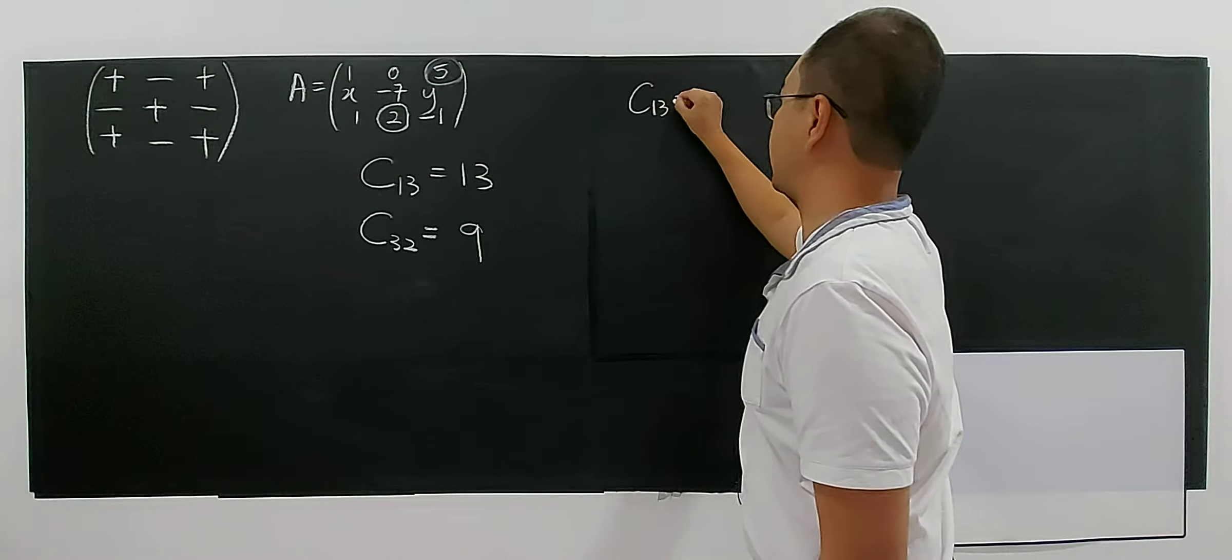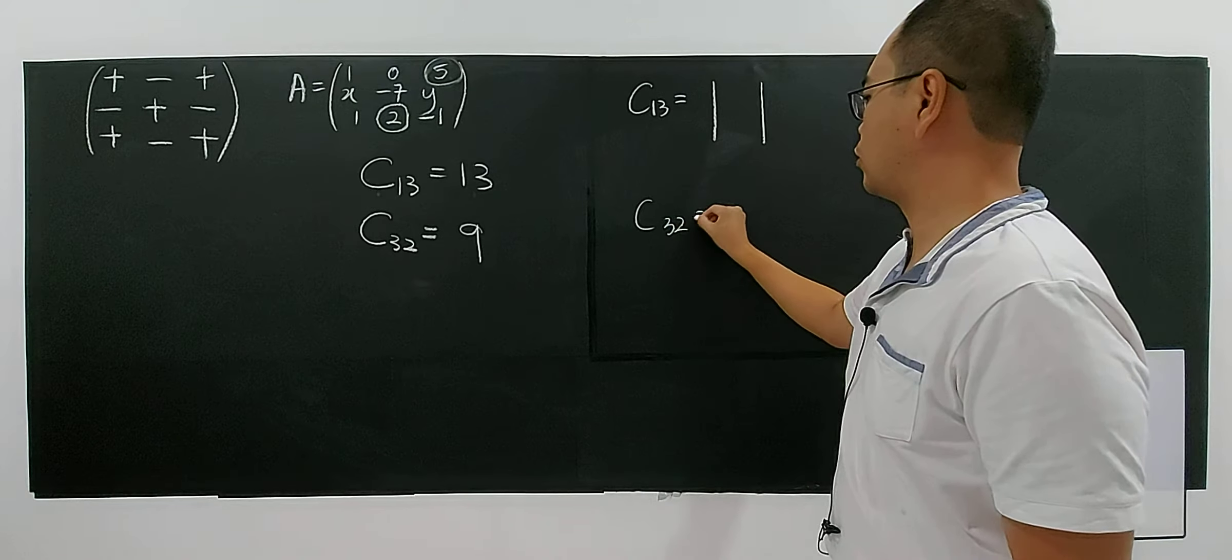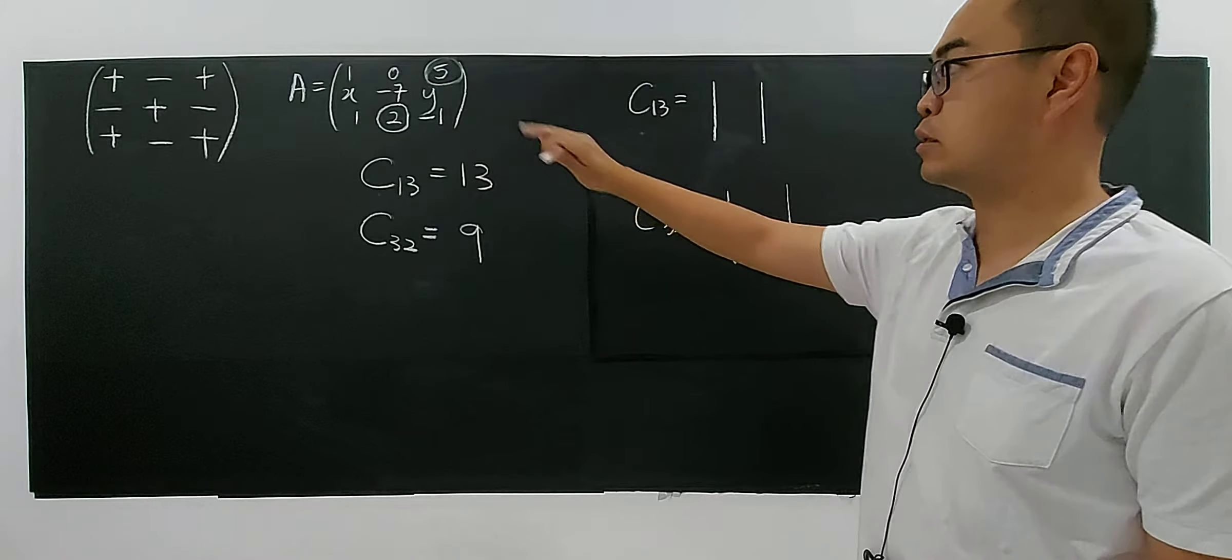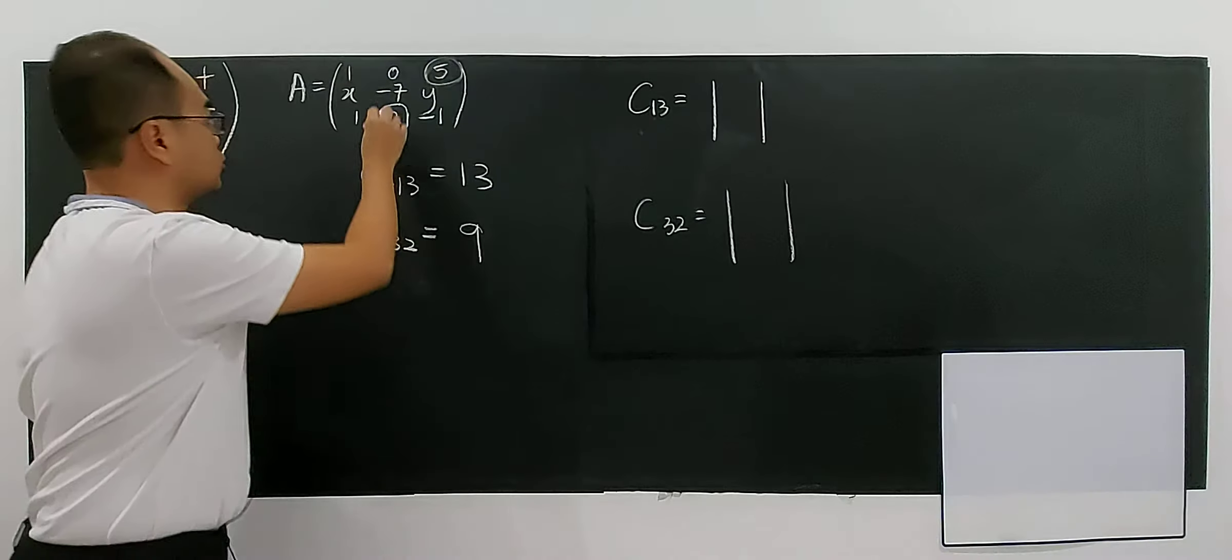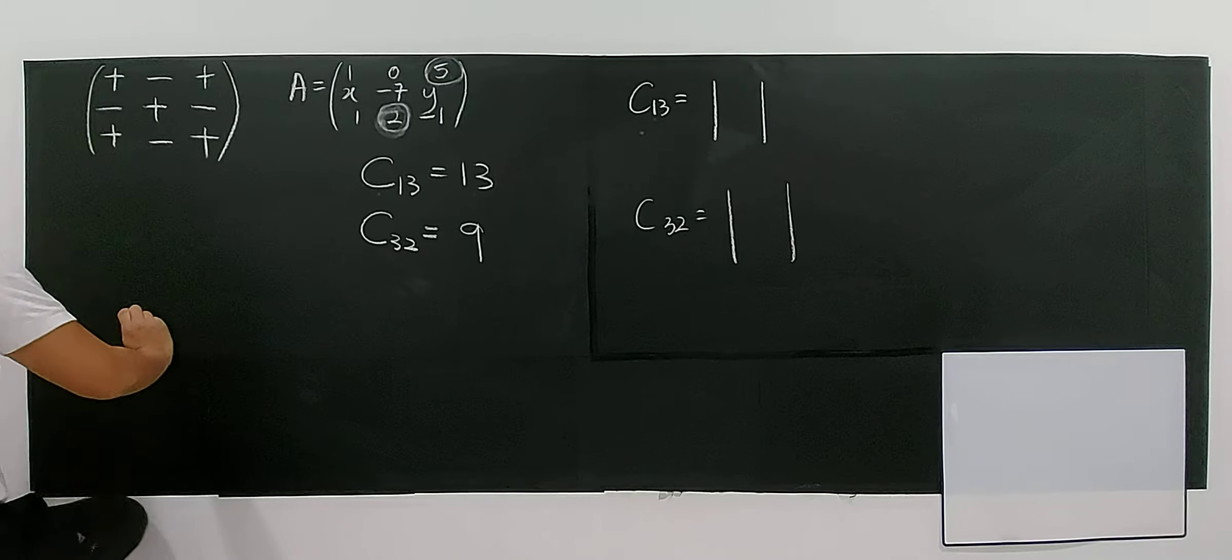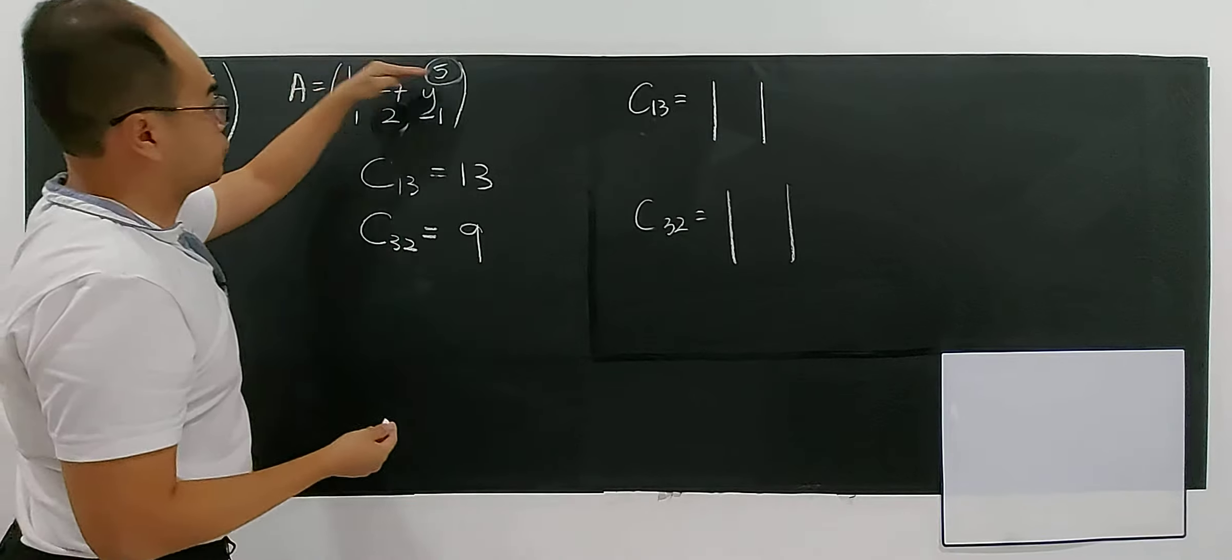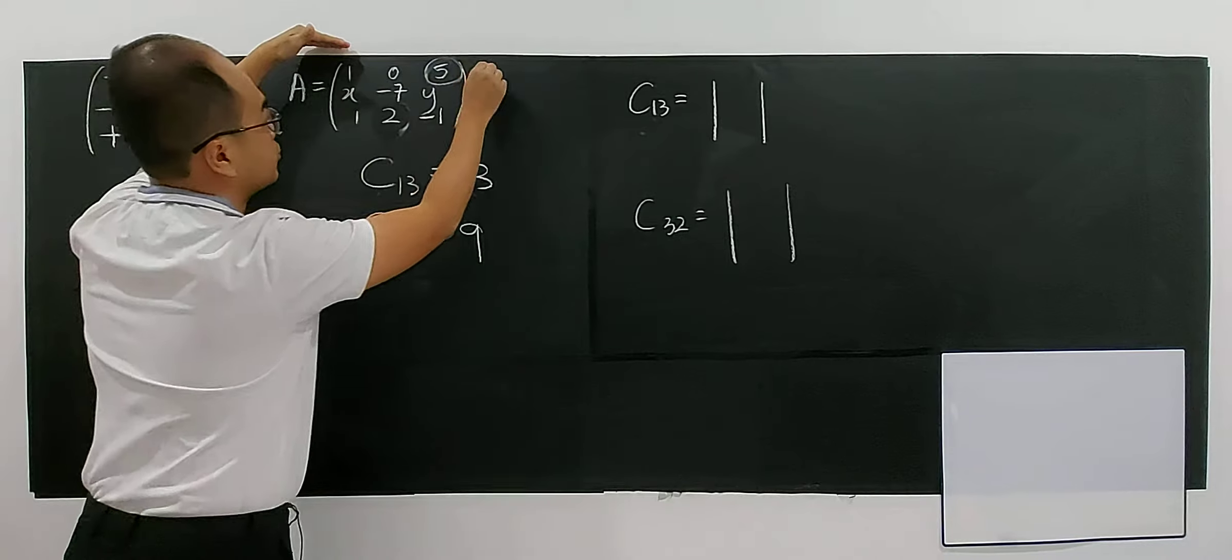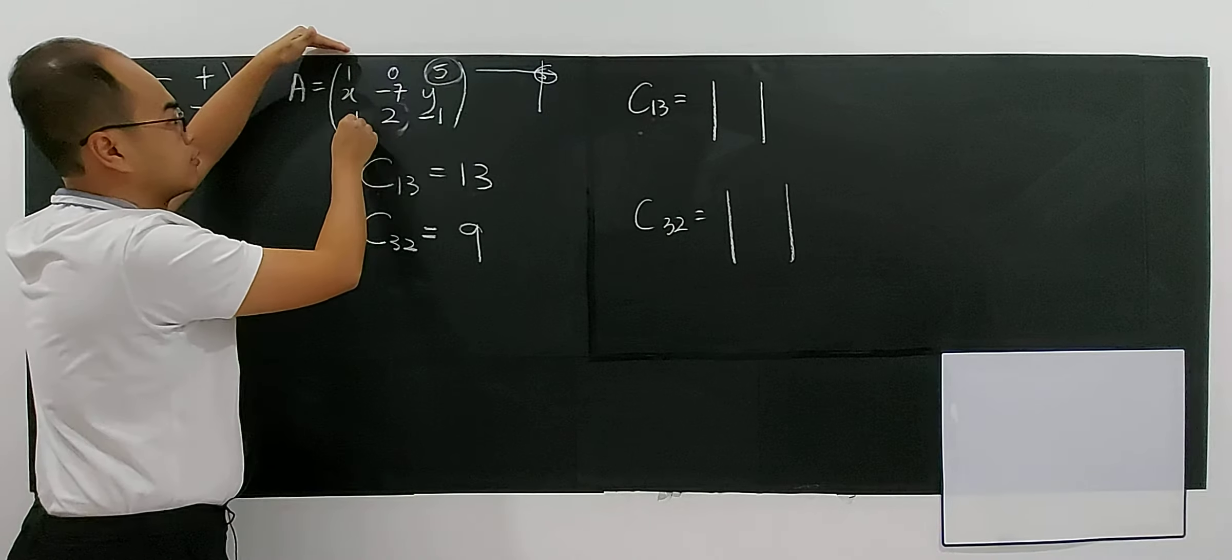Cofactor 13. It's just like finding a minor first. You're finding minor. Let's look at the sign first. Now, for 5, right? Because it's in the first row, third column. So if you delete the row and the column for 5, you have x, negative 7, 1, 2, right?